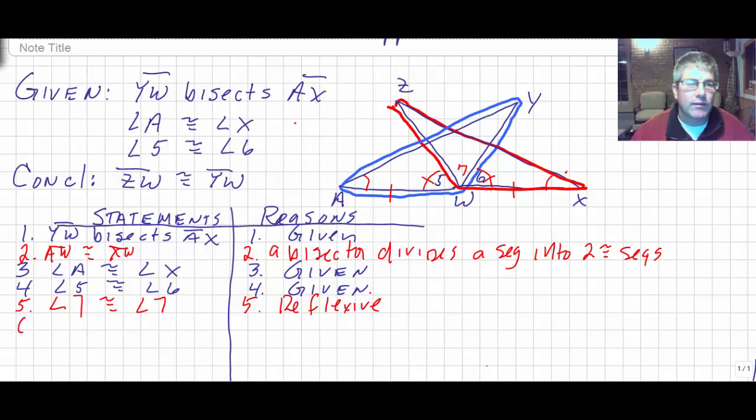And if we know that the same angle is added to two congruent angles, their sums are congruent. So then we know that angle AWY is congruent to angle XWZ by addition of the same angle. So we can do addition the same.